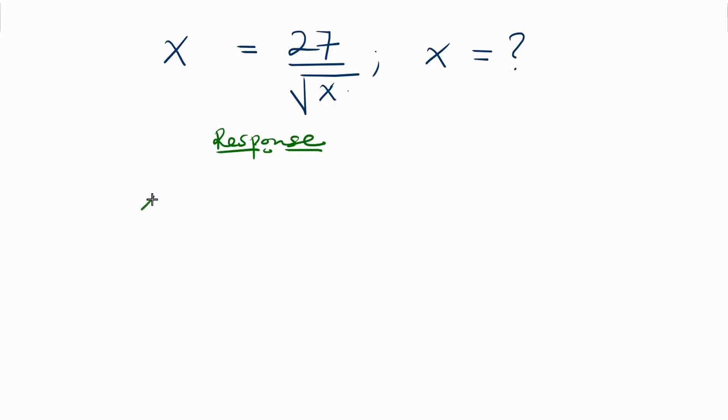So as we have x being equal to 27 divided by the square root of x, this is divided by 1.